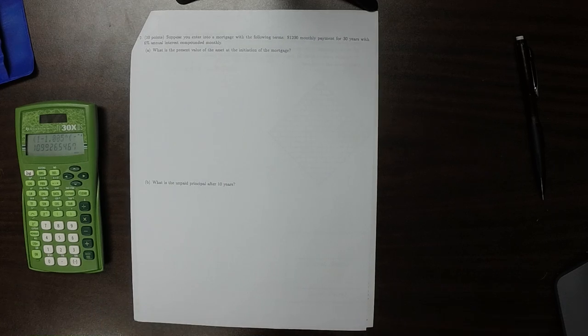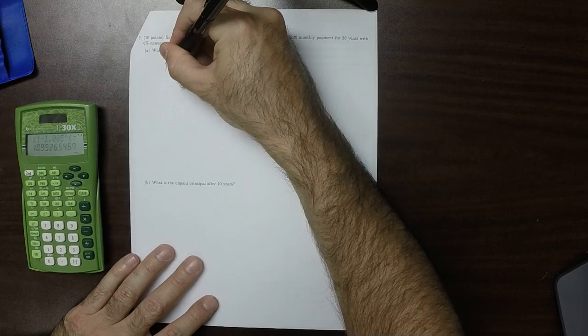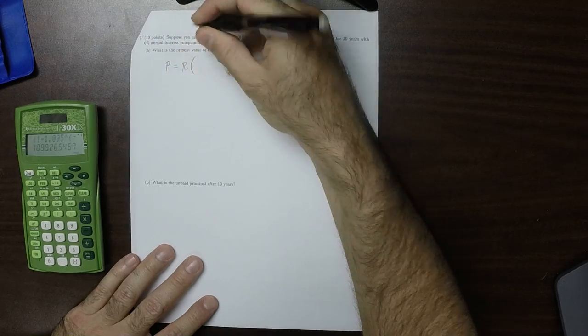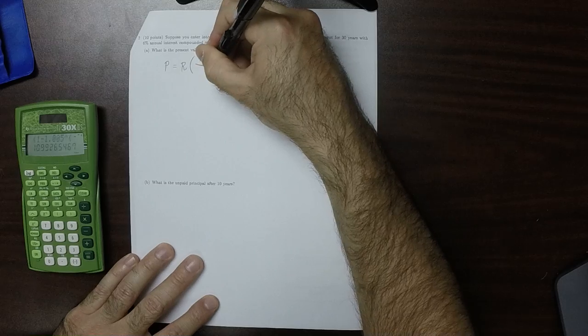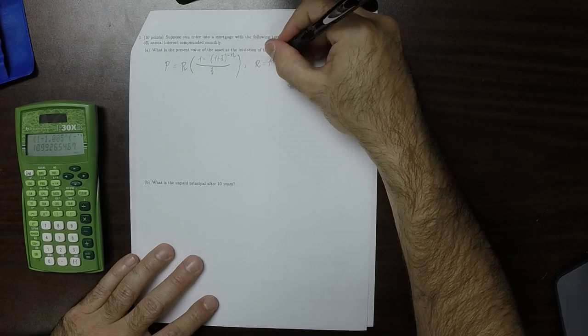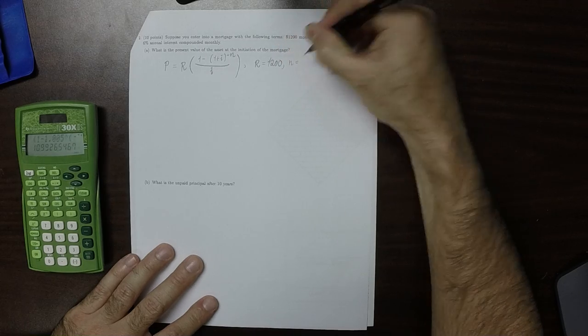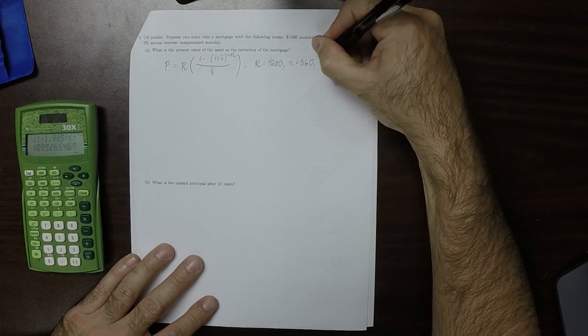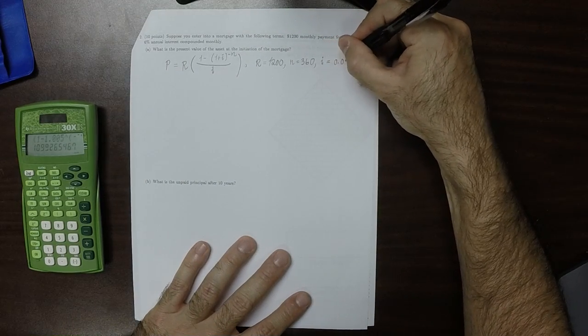Okay, question two. So we have a present value question. Suppose we enter into a mortgage with these terms. So what is the present value? We'll be using the formula P is R multiplied by 1 minus 1 plus I to negative N over I. And we're using R is $1,200. Monthly payments for 30 years. So N is 360, and I is 6% but compounded monthly. So that's 0.005.